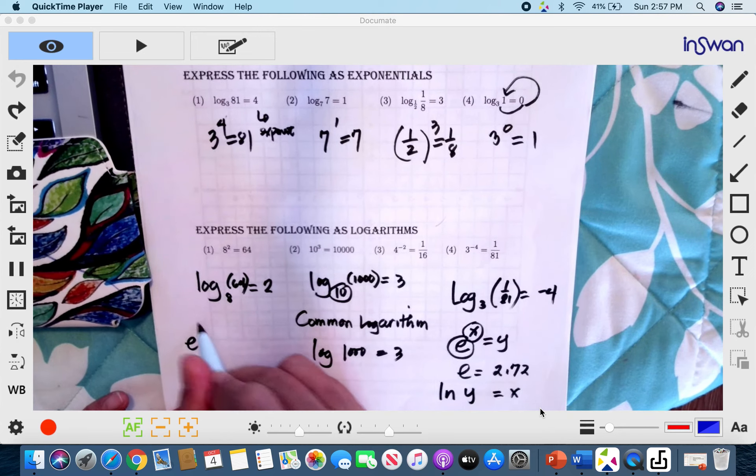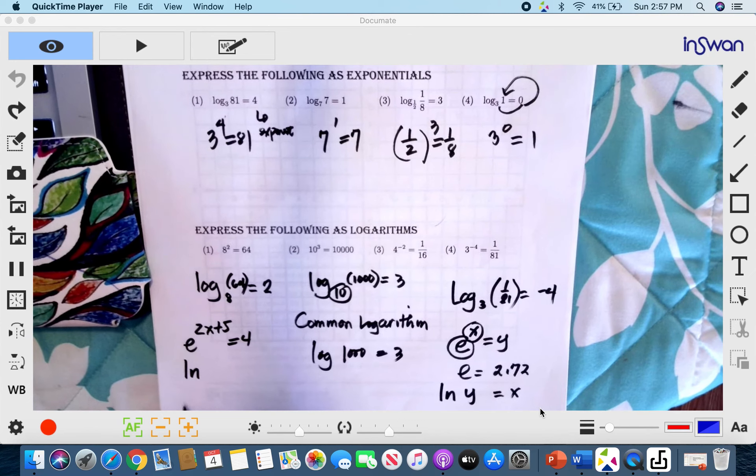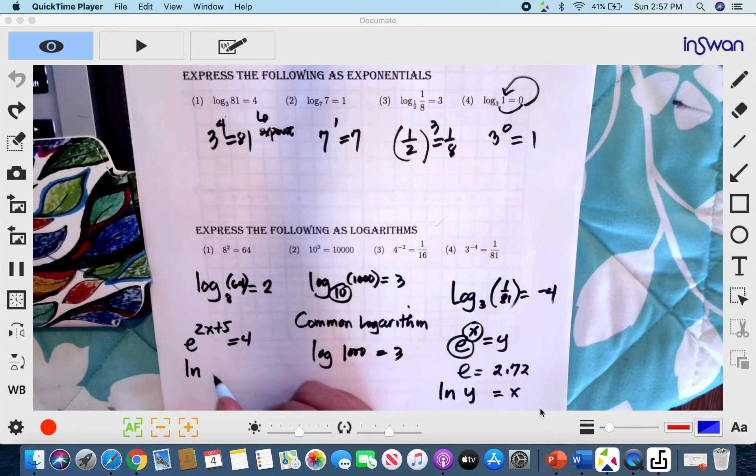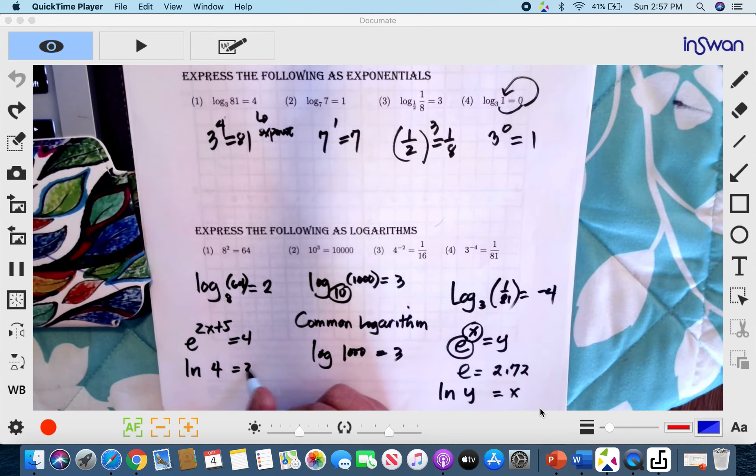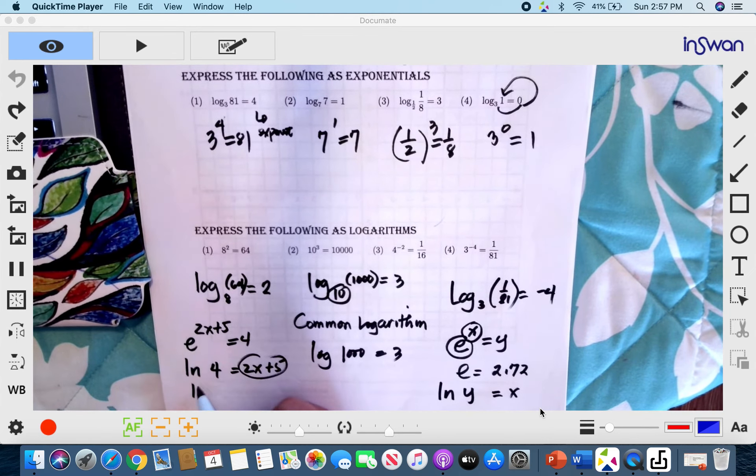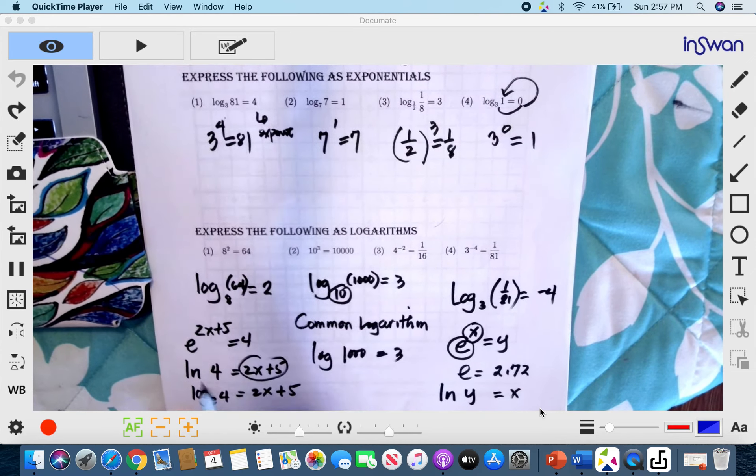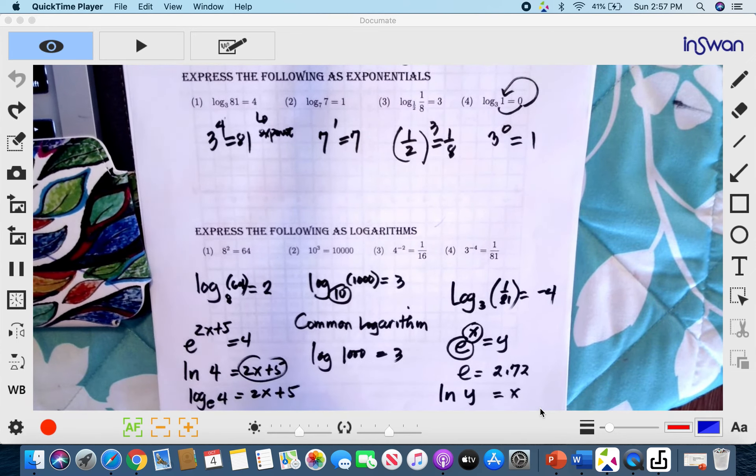So if you have e raised to 2x plus 5 is equal to 4, write ln. That means logarithm of base e. And 4. And our exponent is 2x plus 5 because this is the exponent. It's also the same as writing it this way. But it's always fitting to write it as natural logarithm of 4 is equal to 2x plus 5.